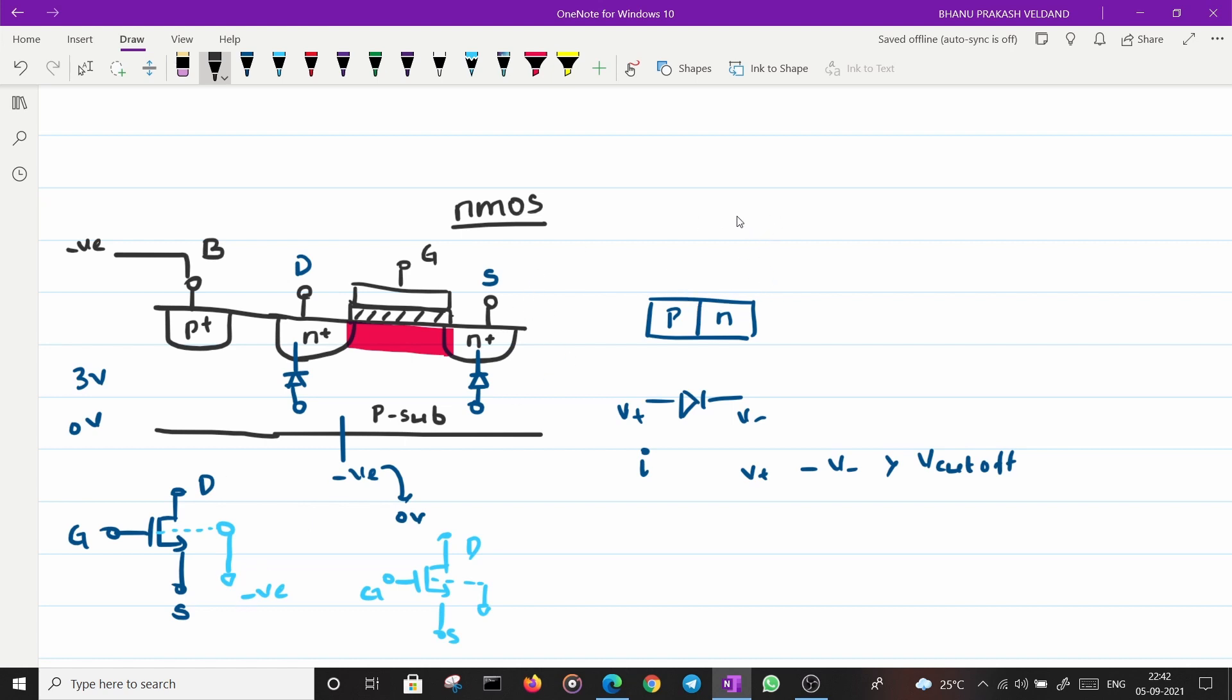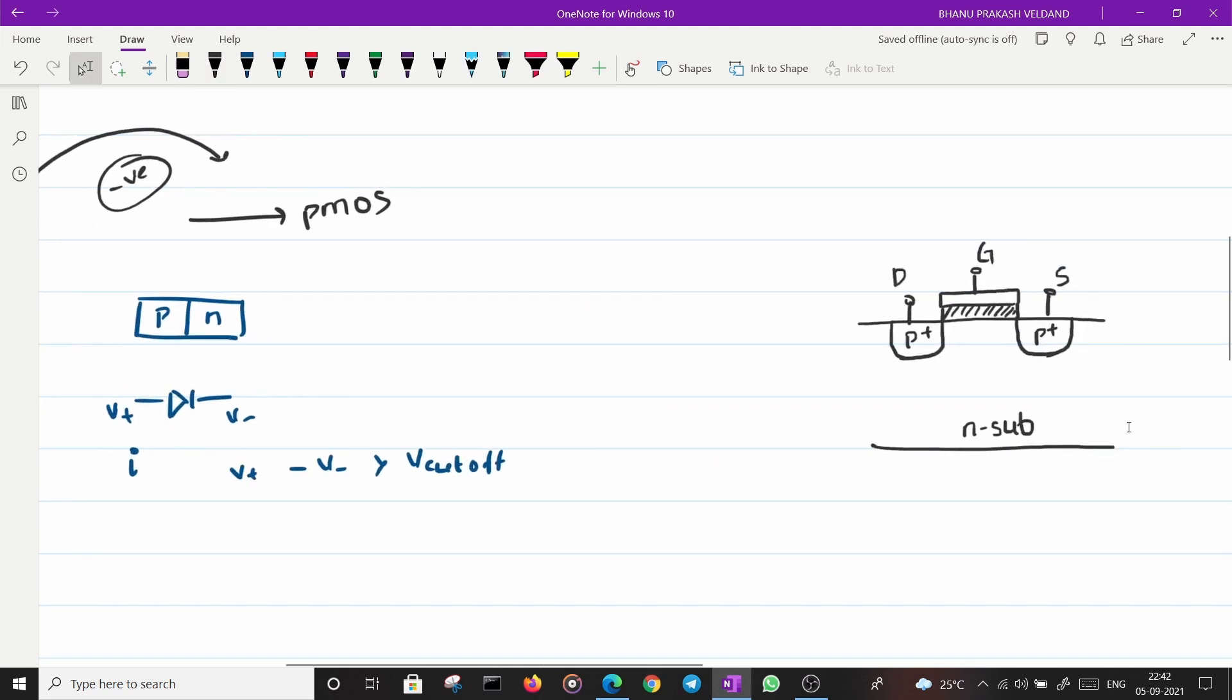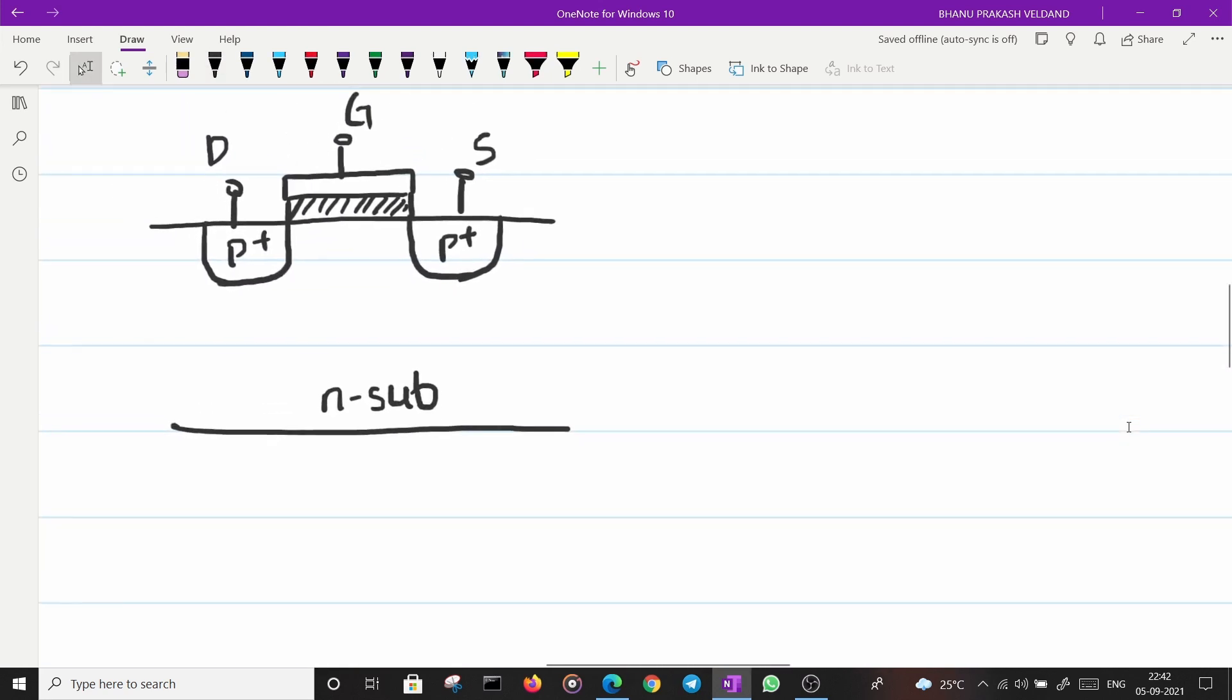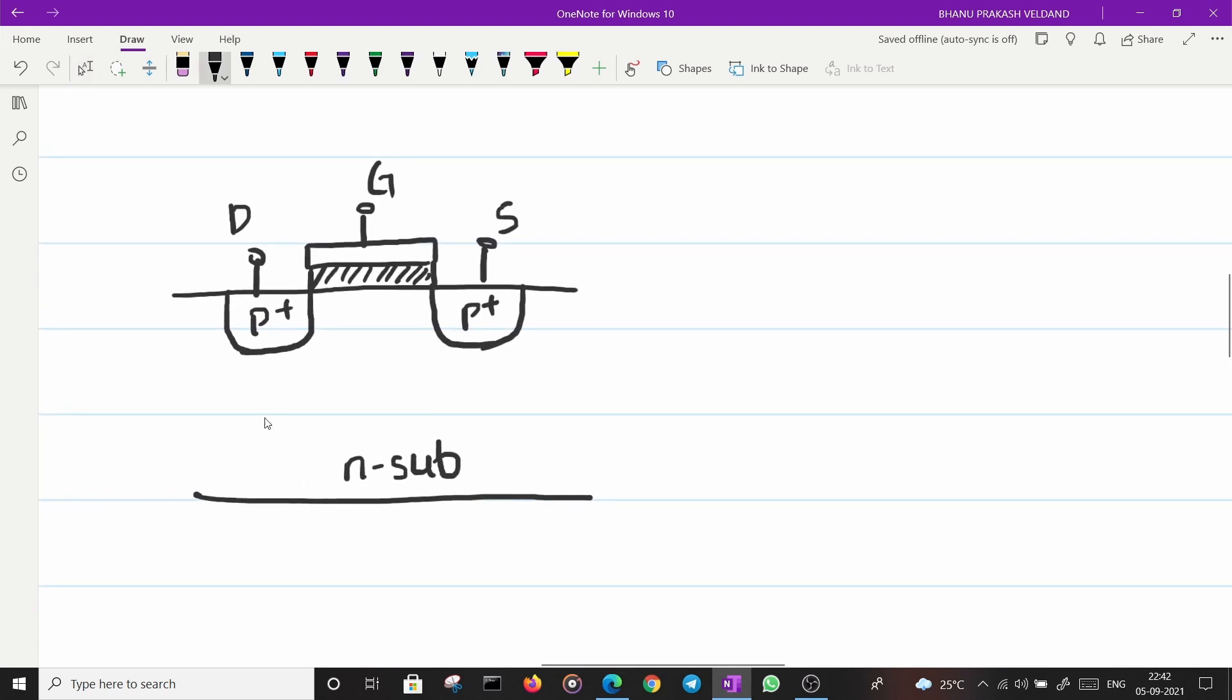Now if we have to look at PMOS, PMOS is nothing but the MOSFET where you invert all the doping types from NMOS. Just invert all the doping types. So you would get this one. You will have an N substrate. You have a polysilicon gate and an oxide to prevent the conduction from gate to the substrate. And you do P plus regions. You call one as the drain and the other as source.